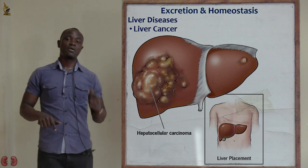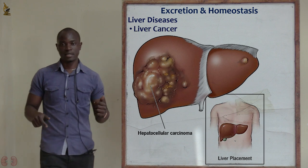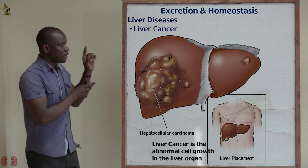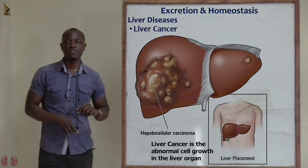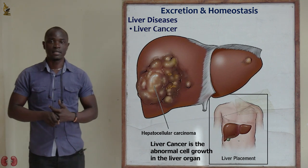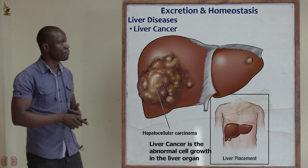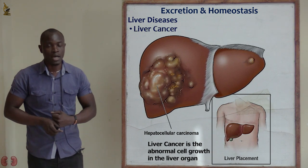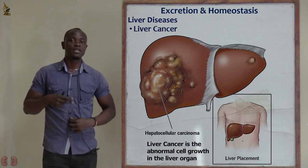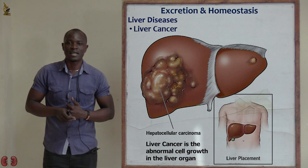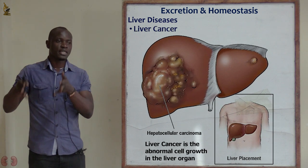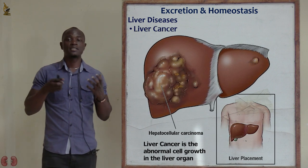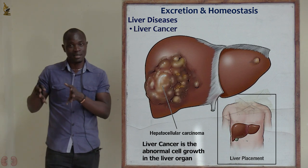The next liver disease is liver cancer. As you can see, this is an affected liver with an abnormal growth on it. Liver cancer is brought about by an abnormal multiplication of liver cells, leading to a lump mainly called carcinoma — specifically hepatocellular carcinoma. That is the name given to the cancerous lump growing on the liver.